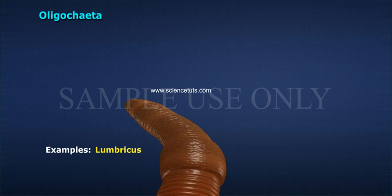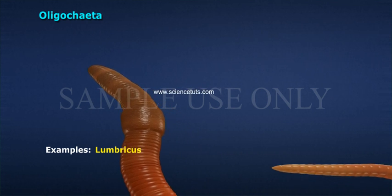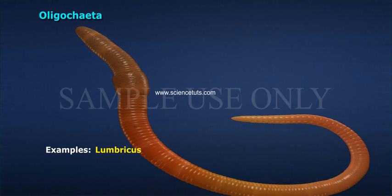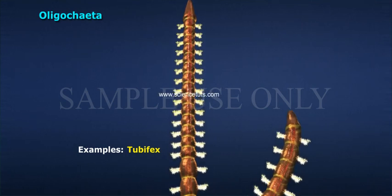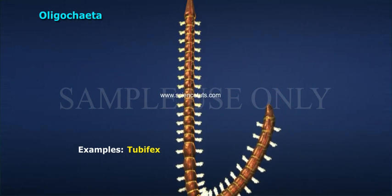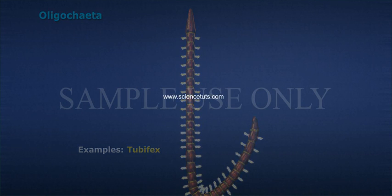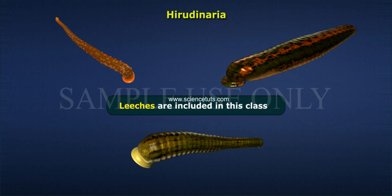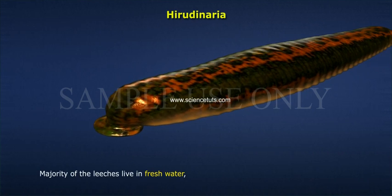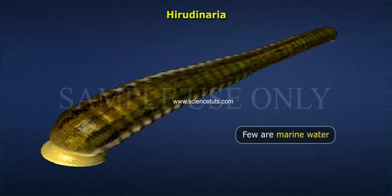Additional examples of Oligochaeta include Lumbricus and Tubifex. Class 3 is Hirudinea — leeches are included in this class. The majority of leeches live in freshwater; few are marine.